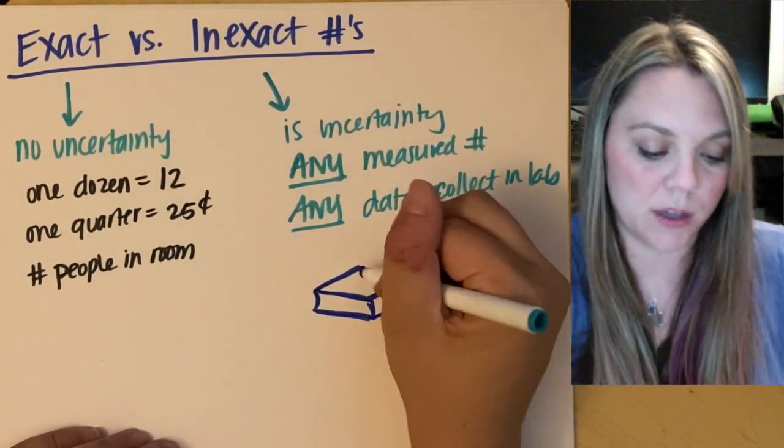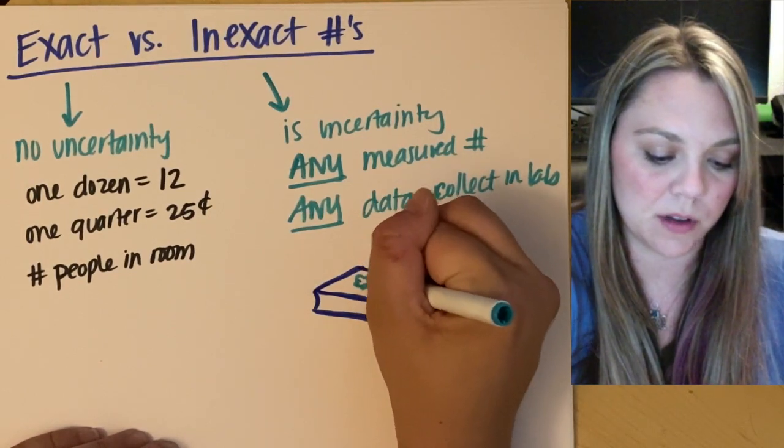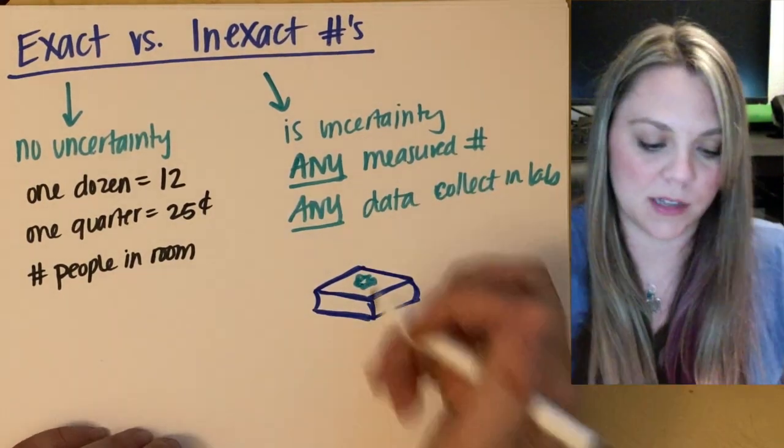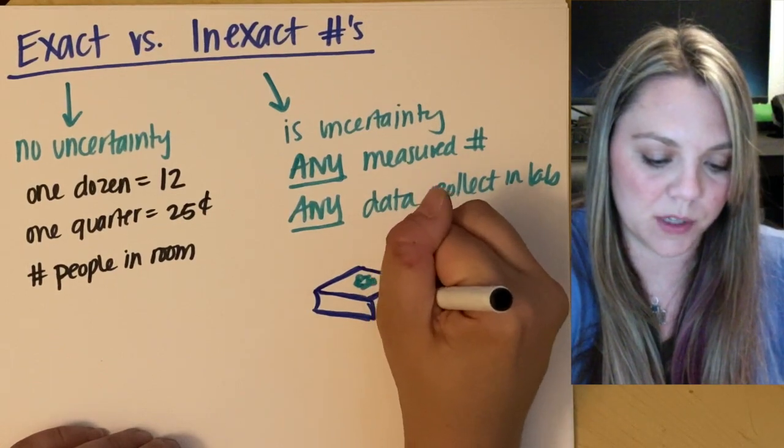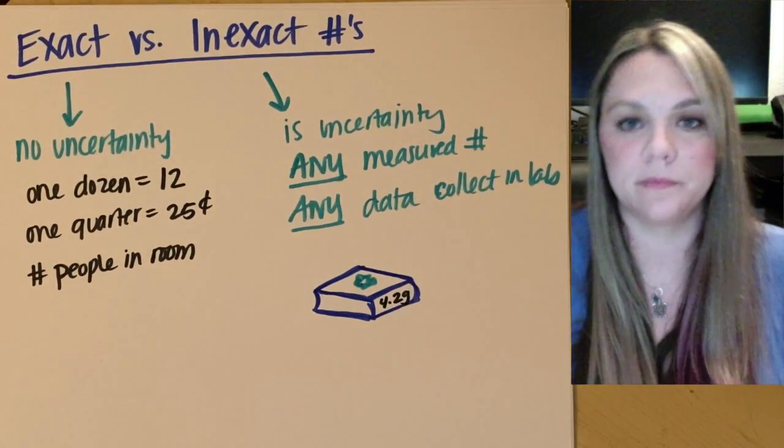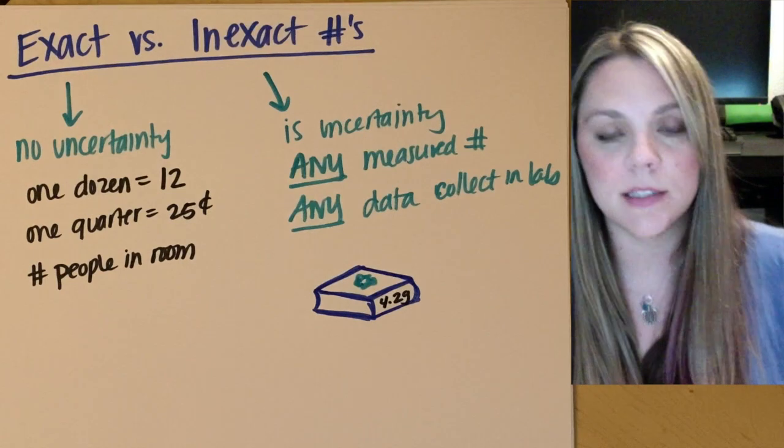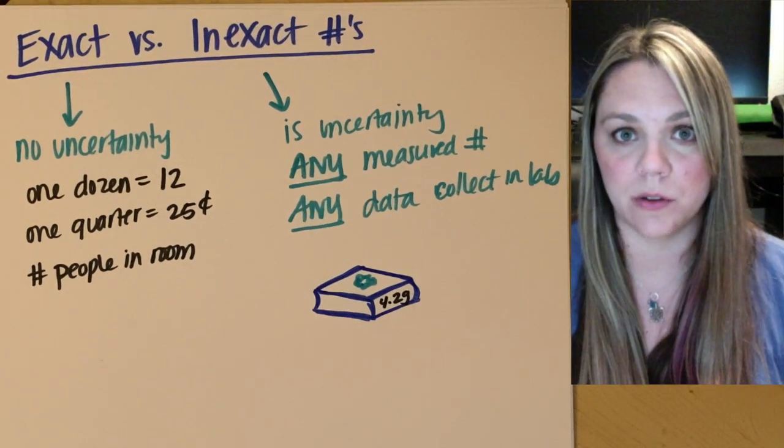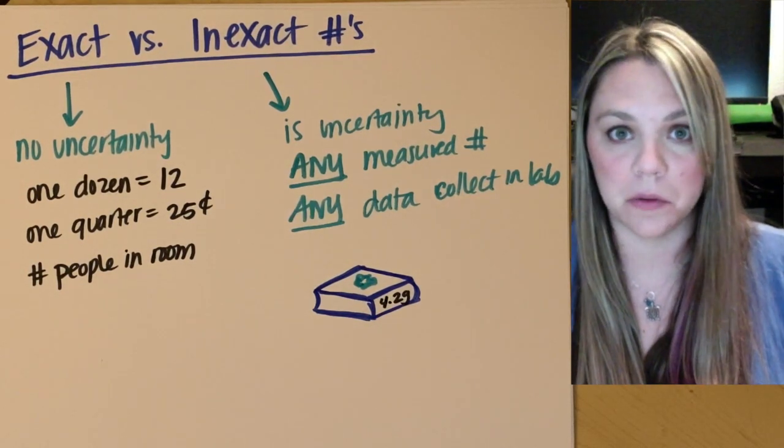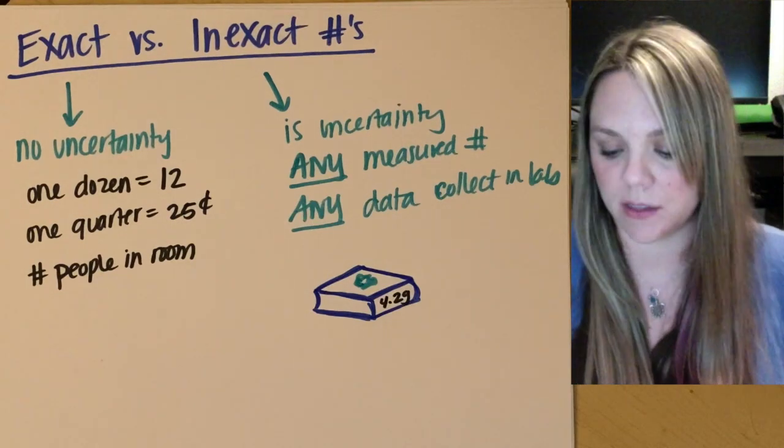Okay. So I go to my scale and I put my sample on my scale and then my scale reads out, you know, 4.2 grams. Okay. Is that sample exactly 4.2 grams? No, it's not. It's inexact. It's rounded, right?